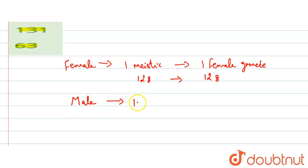one meiotic division forms four male gametes.